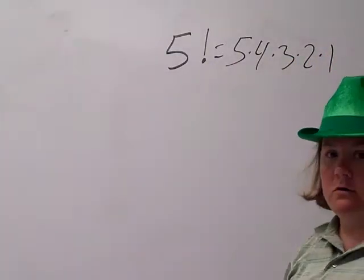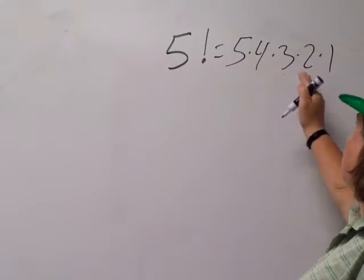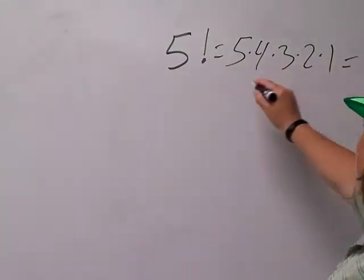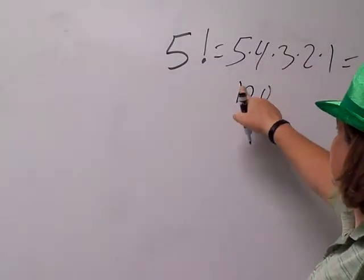So five factorial is five, four, three, two, one. Multiply five times four, three, two, one. Okay. Do that. Should get 120.